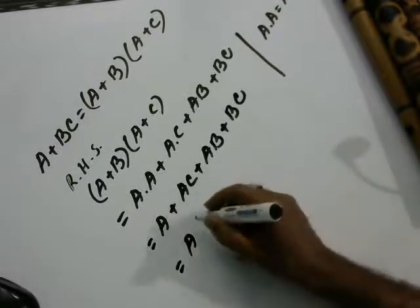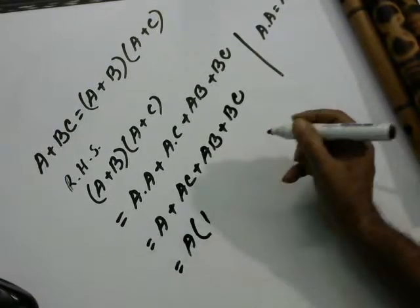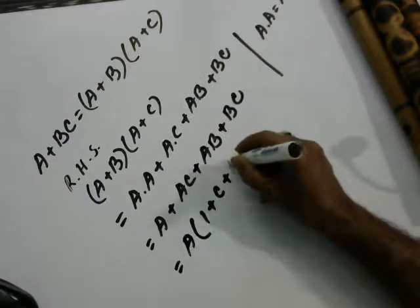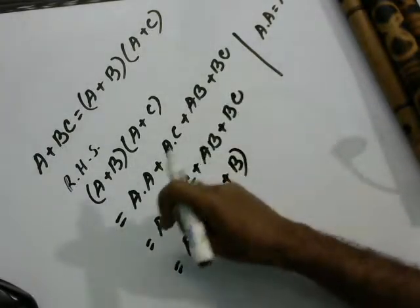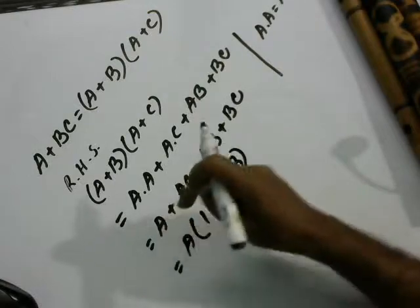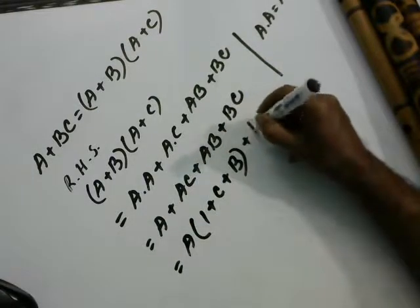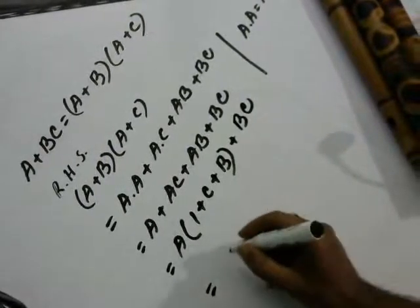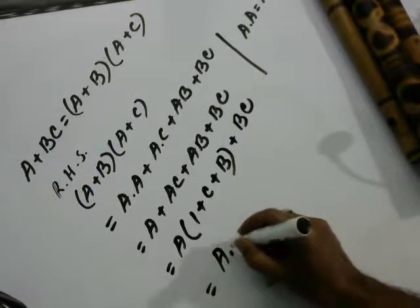A plus B plus BC. C plus B from here to common A plus BC equal A into 1.